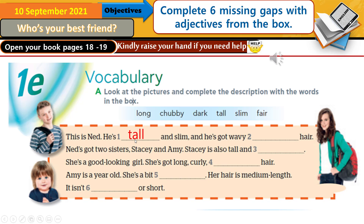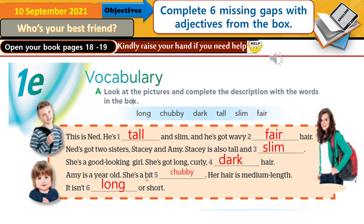Let's check the answers. This is Ned — he's tall and slim. He's got wavy fair hair. Ned's got two sisters, Stacey and Amy. Stacey is also tall and slim — she's a good-looking girl with long, curly, dark hair. Amy is a bit chubby — chubby is the opposite of slim and means fat. Her hair is medium length; it isn't long or short. We use the adjective 'long' with hair. Please correct any mistakes.